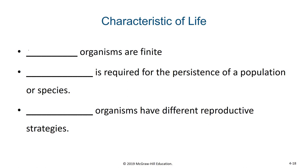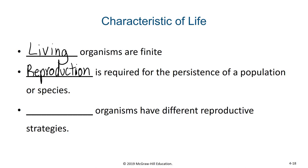Living organisms are finite. What I mean by that is a living organism has a set lifespan — it will live for so long, and then it will die. Reproduction is required for the persistence of a population. For a population to continue and stay at a somewhat constant size, the death rate and the birth rate have to be equal. If it's a growing population, the birth rate exceeds the death rate; if it's a shrinking population, the death rate exceeds the birth rate. Different organisms have different reproductive strategies.